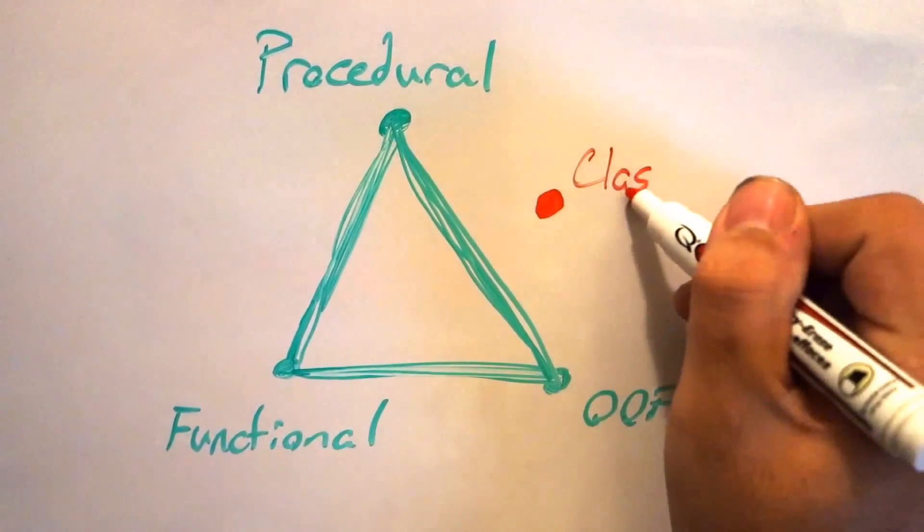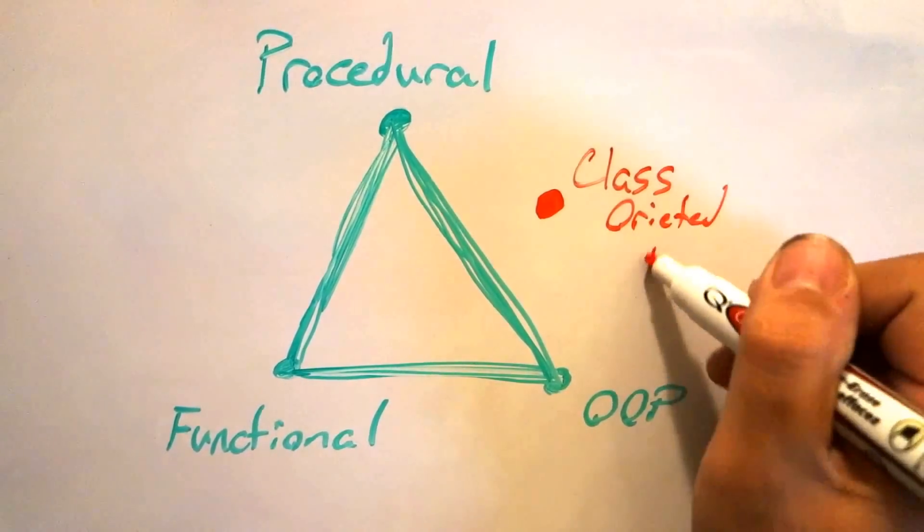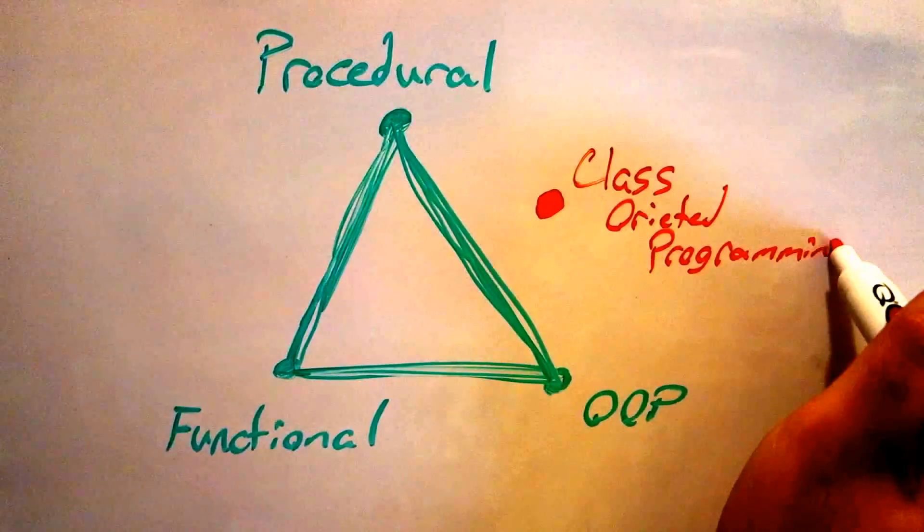So now we have this nice triangle, except there's this weird point out here which we can call class oriented programming.